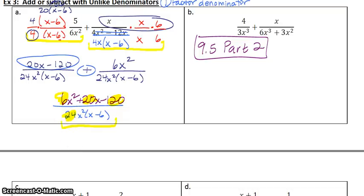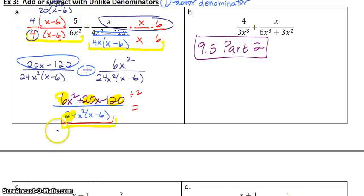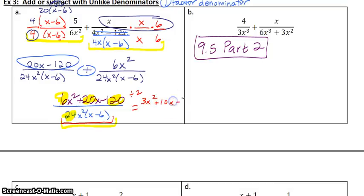I actually have to take this one step further and divide every chunk by 2. This whole thing counts as one chunk because it's all stuff multiplied together. That parentheses with the minus sign just counts as something multiplied together. When I divide by 2, I get a final answer of 3x squared plus 10x minus 60 divided by 12x squared times x minus 6.